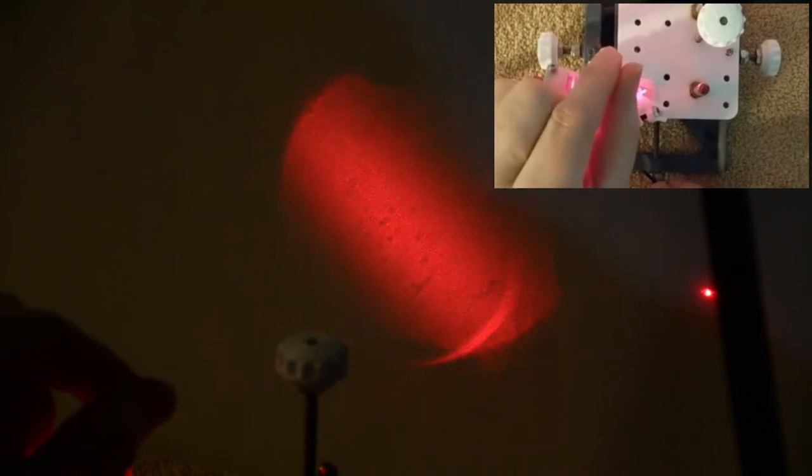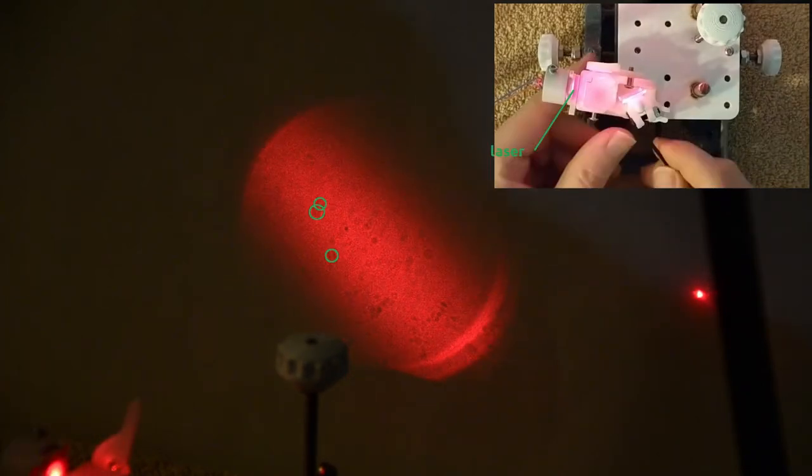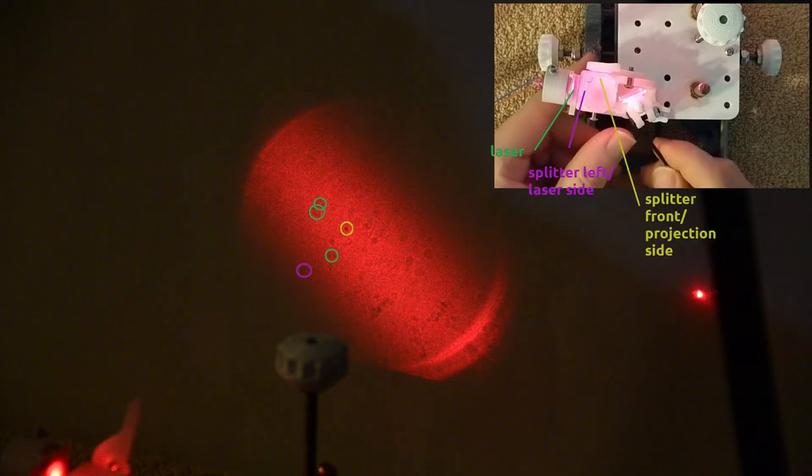I find it interesting that you can actually differentiate all four of these: laser, left side of splitter, projection side of splitter, and diverger, all just by rotating the cube. It's unusual to have so much dust on so many surfaces, but since I do have so much, you can see the four different movements.